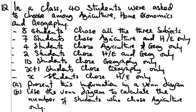The question reads: In a class, 40 students were asked to choose among Agriculture, Home Economics, and Geography. So it was found out that 8 students chose all the three subjects - Agriculture, Home Economics, and Geography.